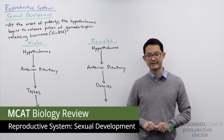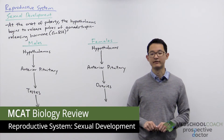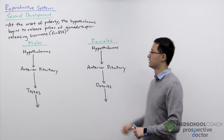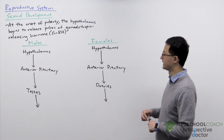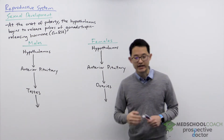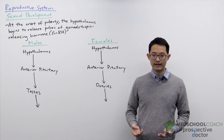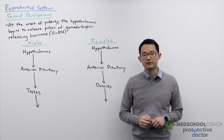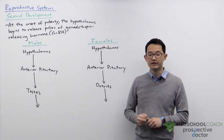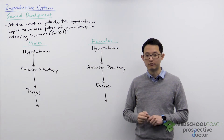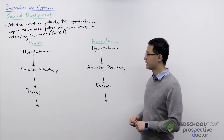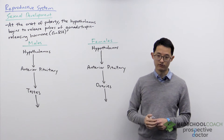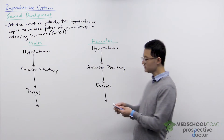In this video we're going to discuss the sexual development of males and females. At the onset of puberty is when the changes really begin to occur. In particular, the hypothalamus begins to release pulses of gonadotropin releasing hormone, and this is going to have different effects on males and females.